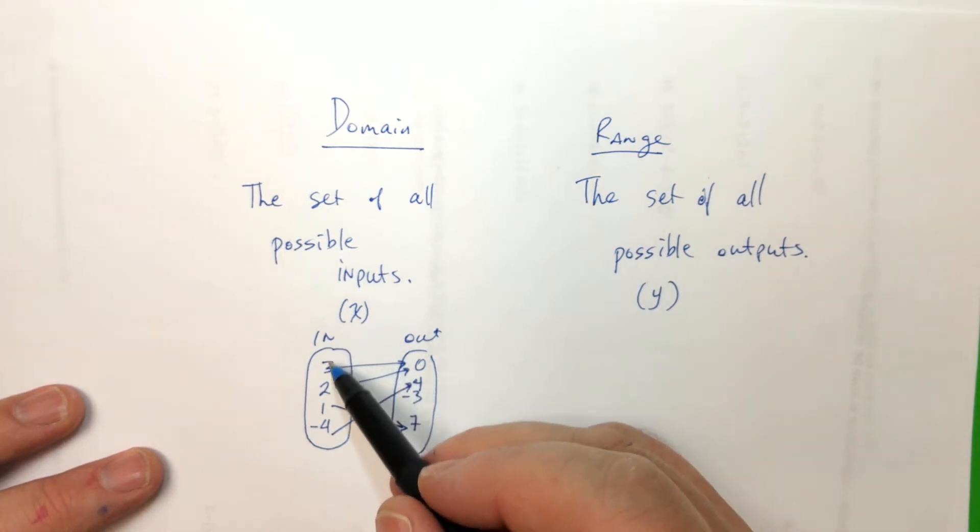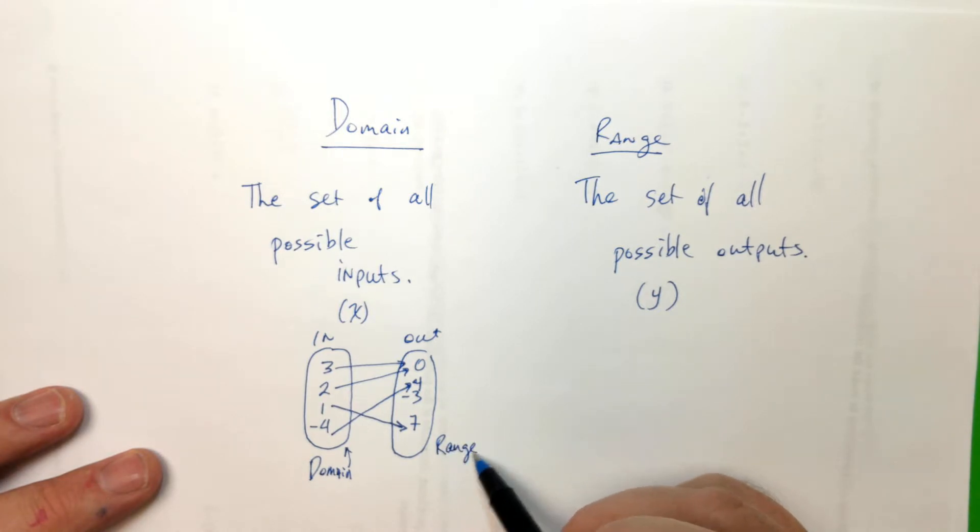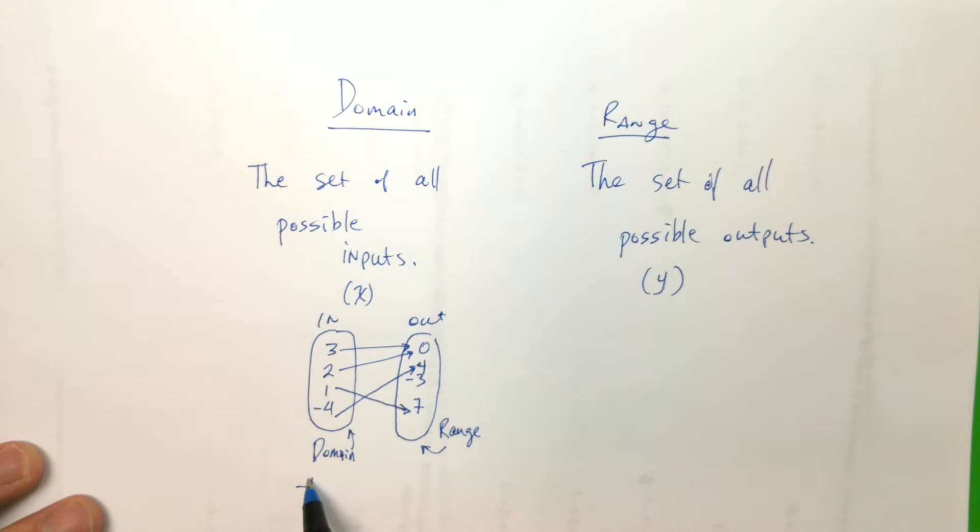Check this out. The domain is the set of all the possible inputs. So the domain is just this right here. That's it. And the range is just this right here. So the domain would be, put it in order. Negative 4, 1, 2, and 3.